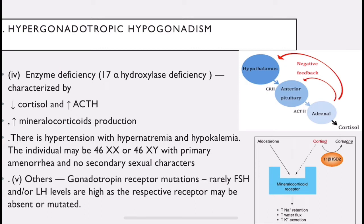The individual may be 46XX or 46XY with primary amenorrhea and no secondary sexual characters. Other causes include gonadotrophin receptor mutations: rarely, FSH or LH levels are high but the respective receptor may be absent or mutated, resulting in amenorrhea.